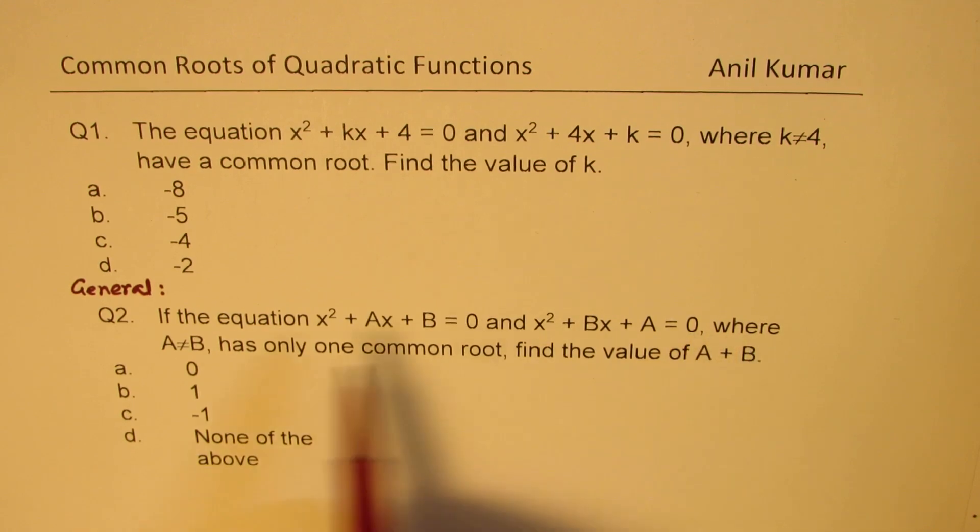so we put b here and a there, equals 0, where a and b are not same, has only one common root. So these two equations have one common root. Find the value of a + b. So that is the question for you. You can always pause the video, answer the question, and then look into my suggestions.